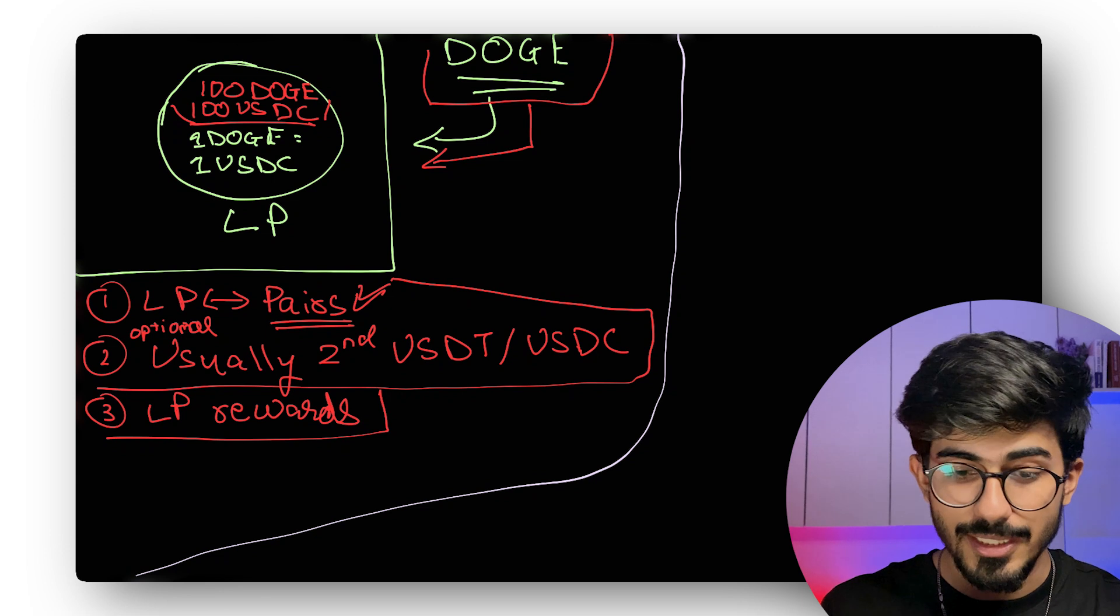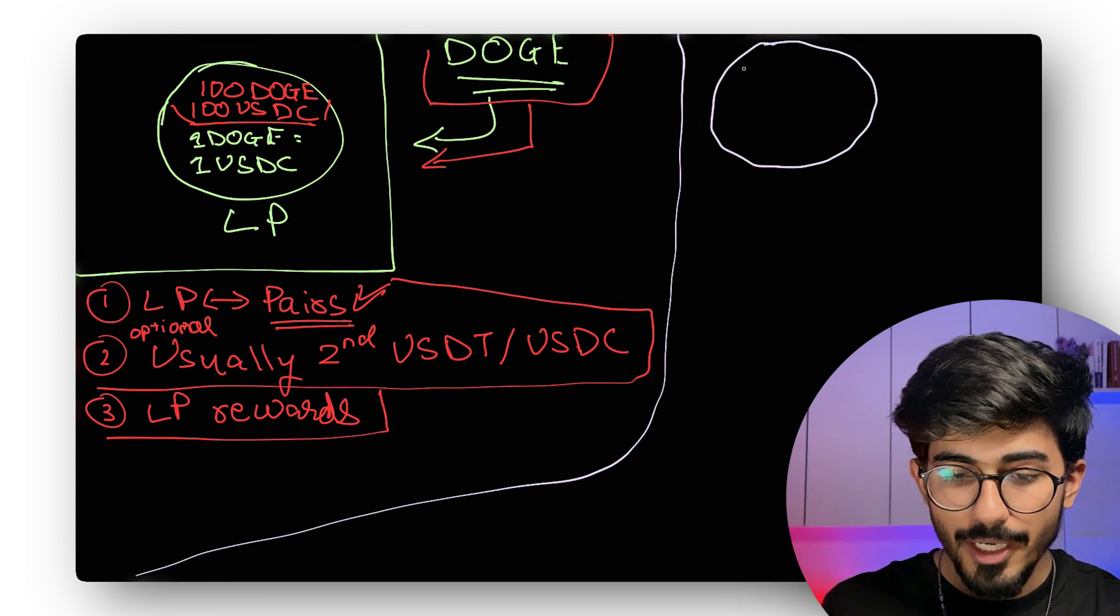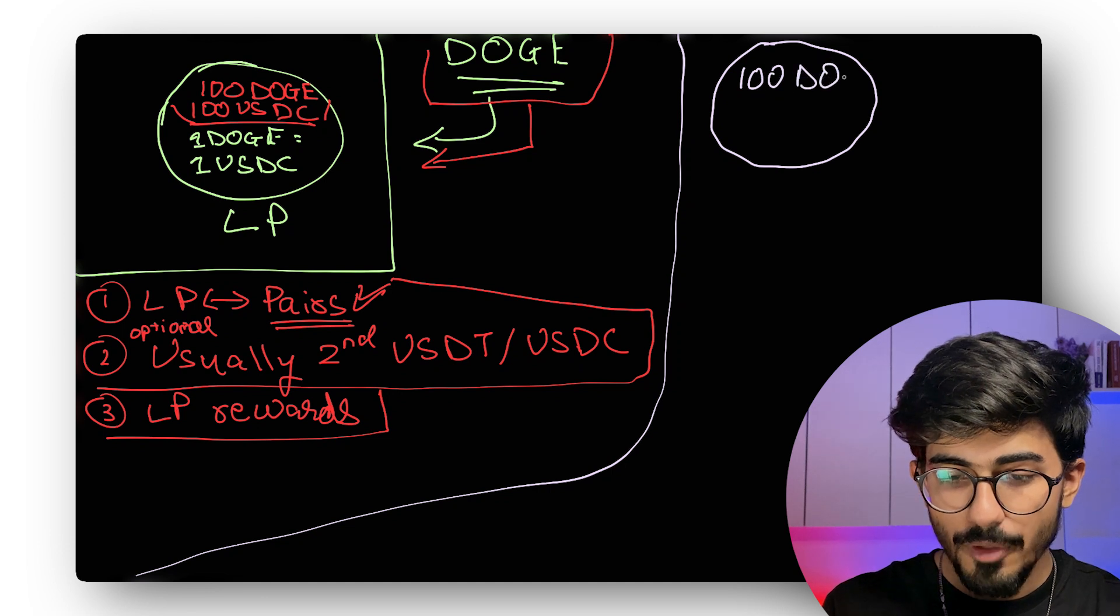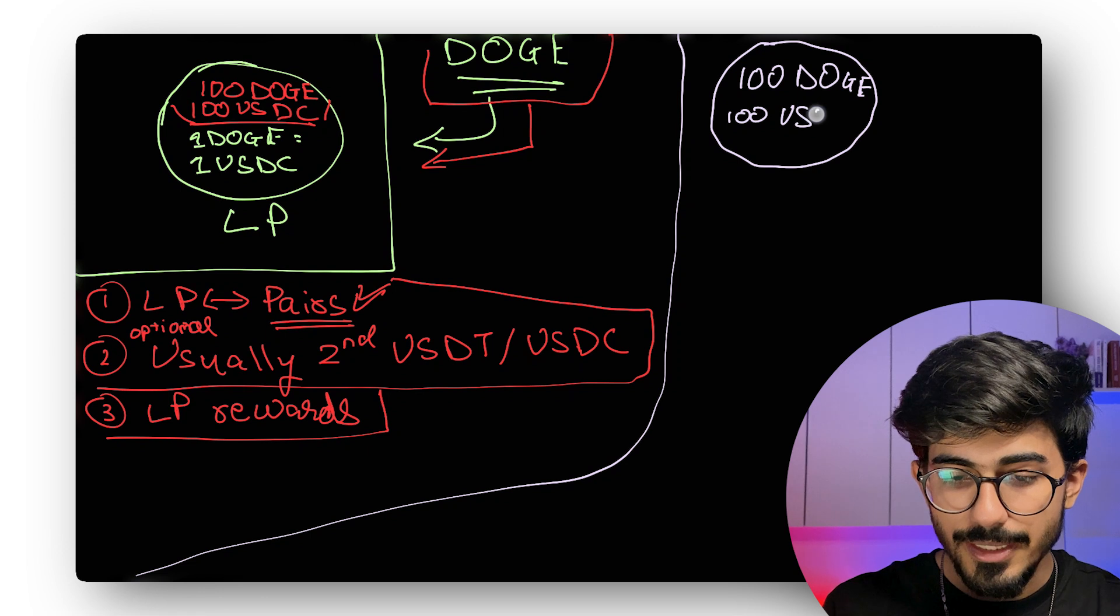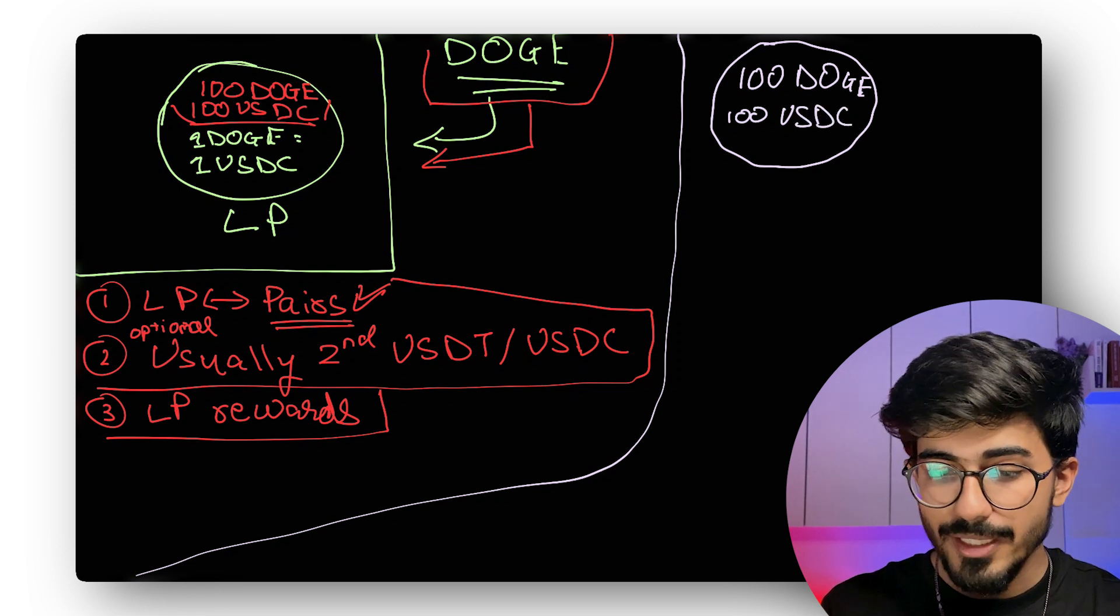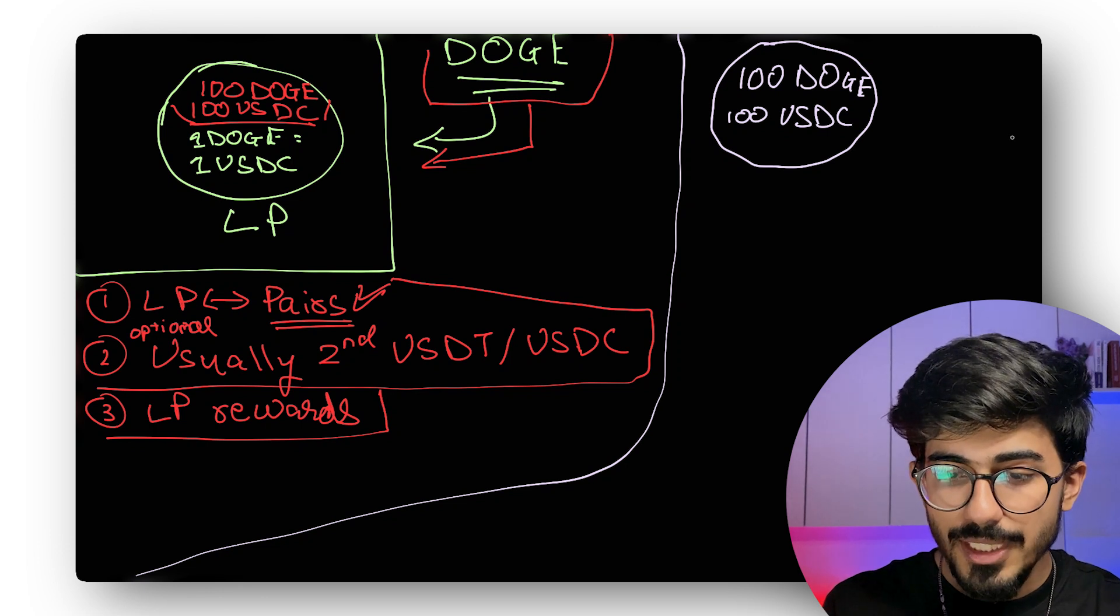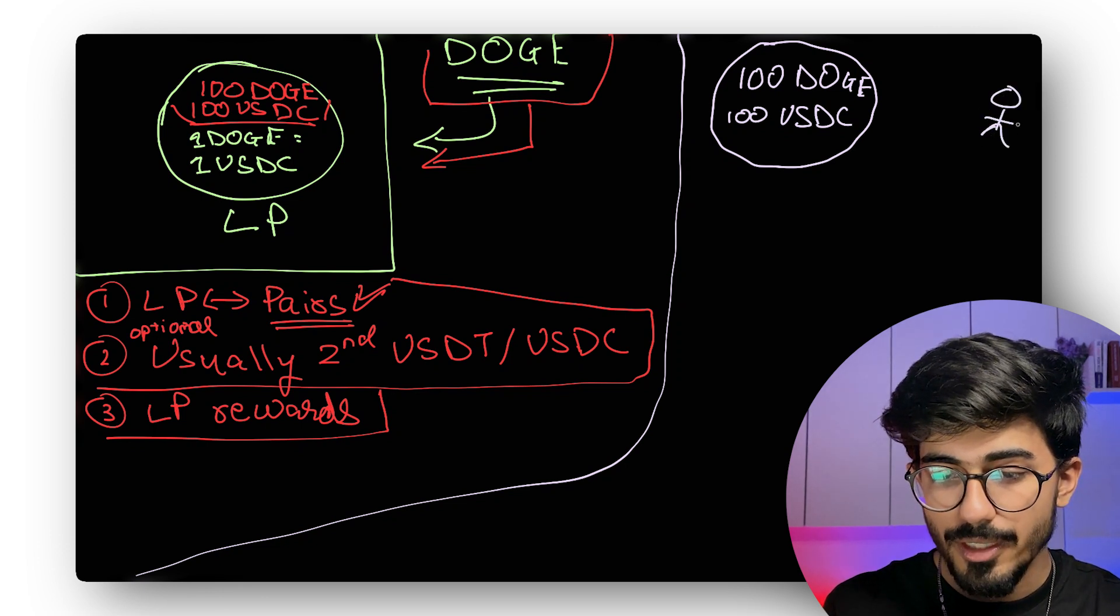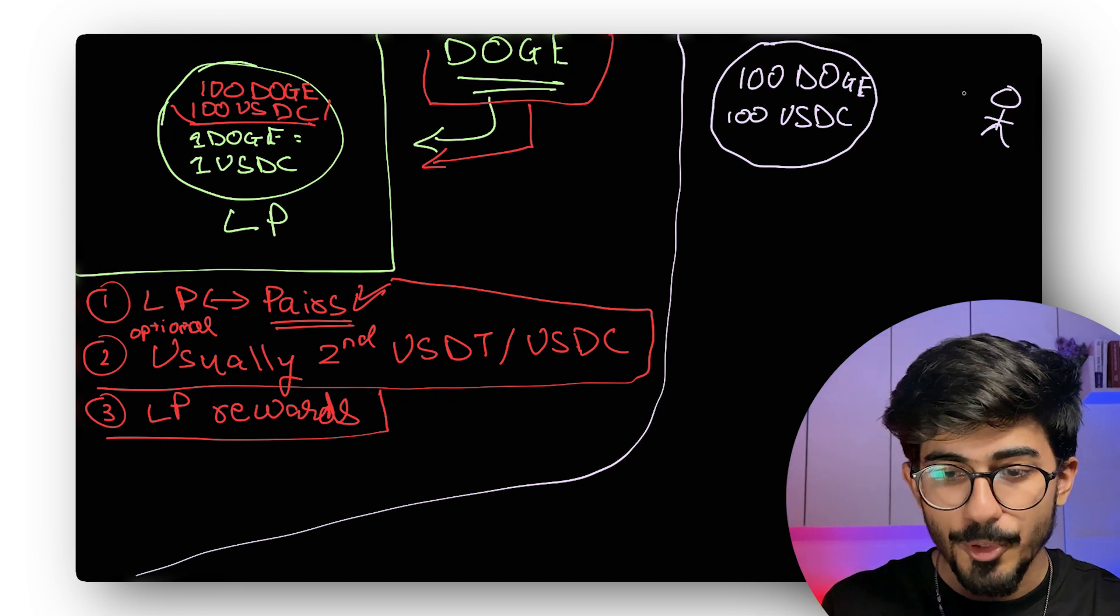Let's understand it using an example. So over here, we'll take the same example, 100 Doge versus 100 USDC. So we've taken the same example and say, for example, you've convinced an investor and you've convinced him to buy 50 Doge coins from you.